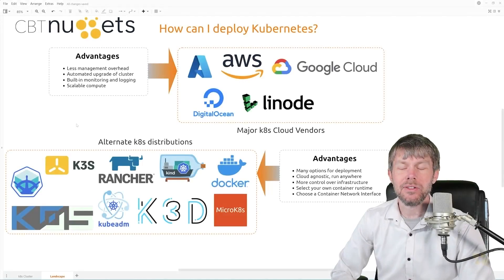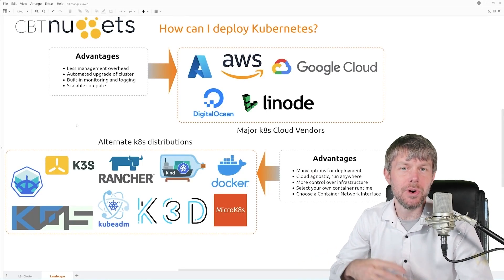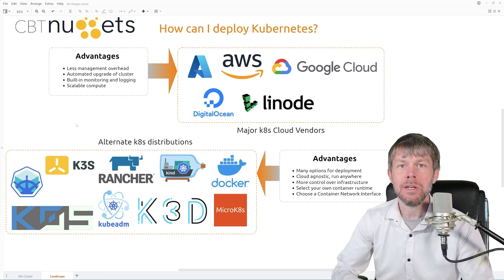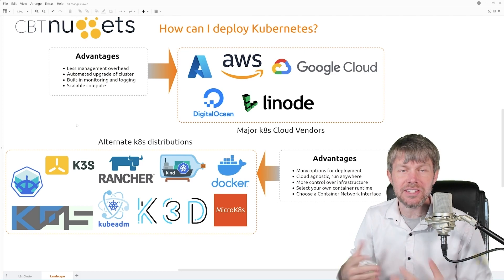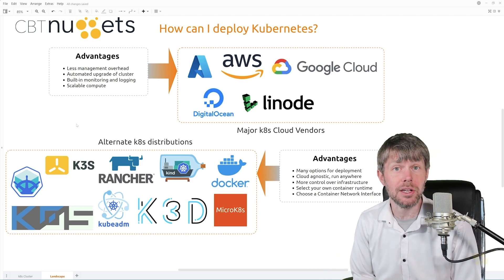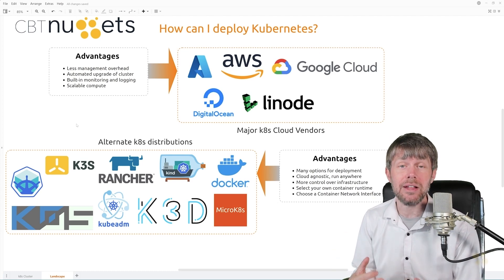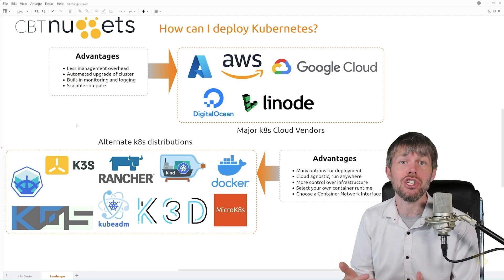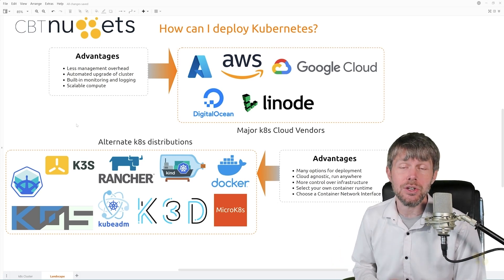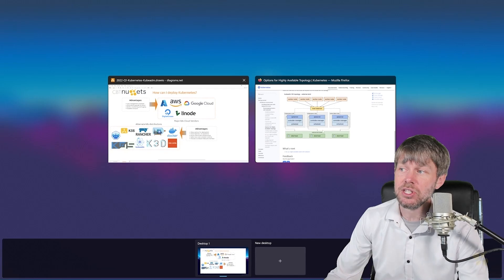Welcome back. Let's take a look at the documentation for how to install kubeadm, then spin up an Amazon Web Services EC2 instance running Ubuntu Linux, and install kubeadm on that virtual machine in order to initialize a new Kubernetes cluster.